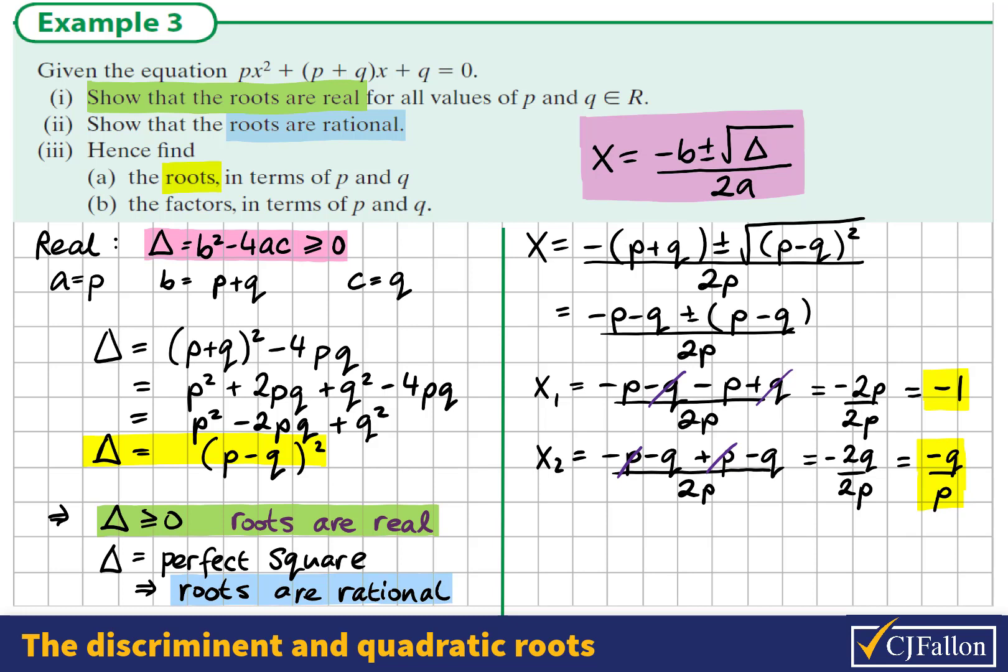So here we have the solutions. Our roots are -1 and -q/p. We're also to find the factors. If we have the solutions, we can quickly write down the factors, because they are related to each other. So if we have x = -1, if we rewrite that so we have an equation equal to 0, we could see that x + 1 = 0. So x + 1 is the related factor.